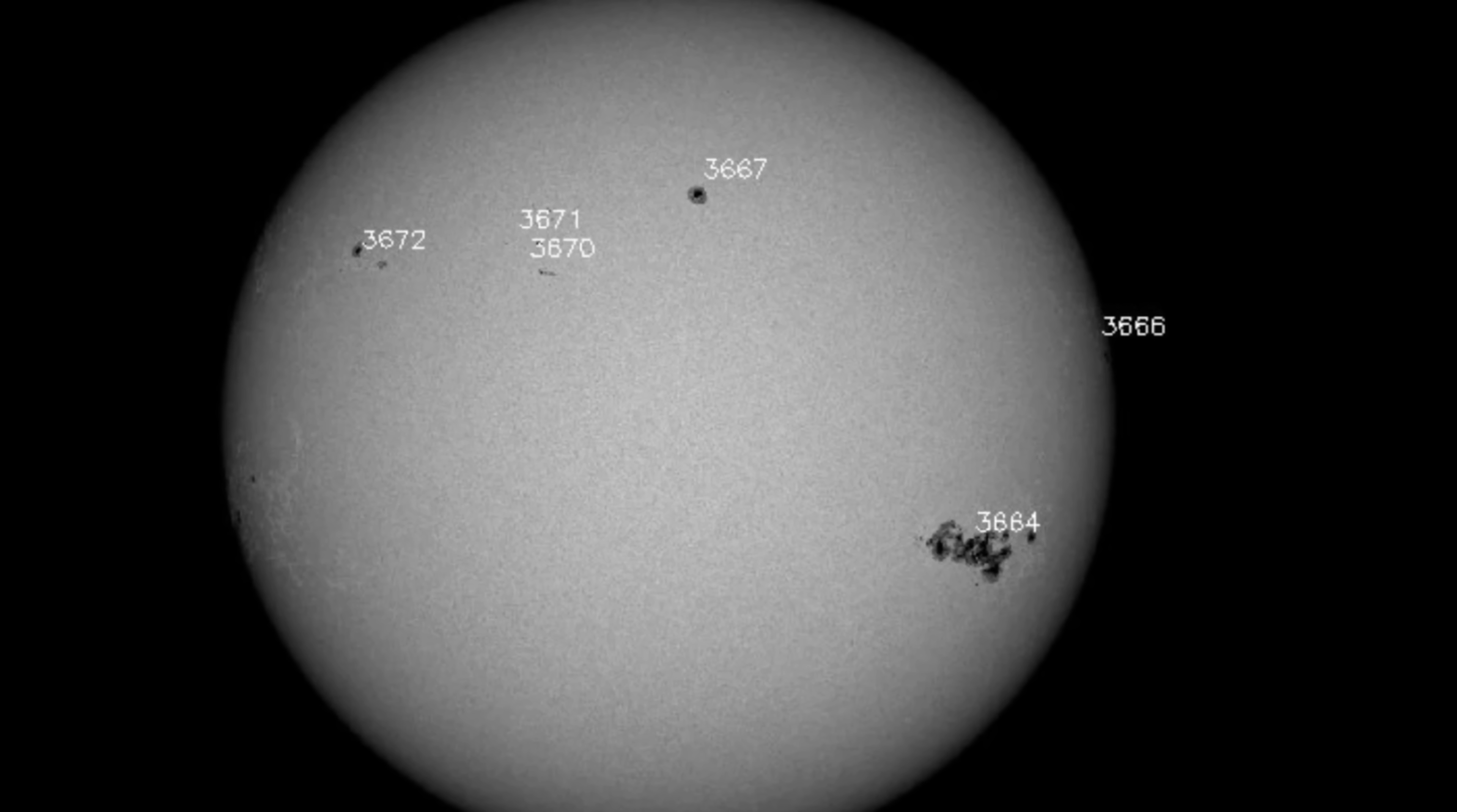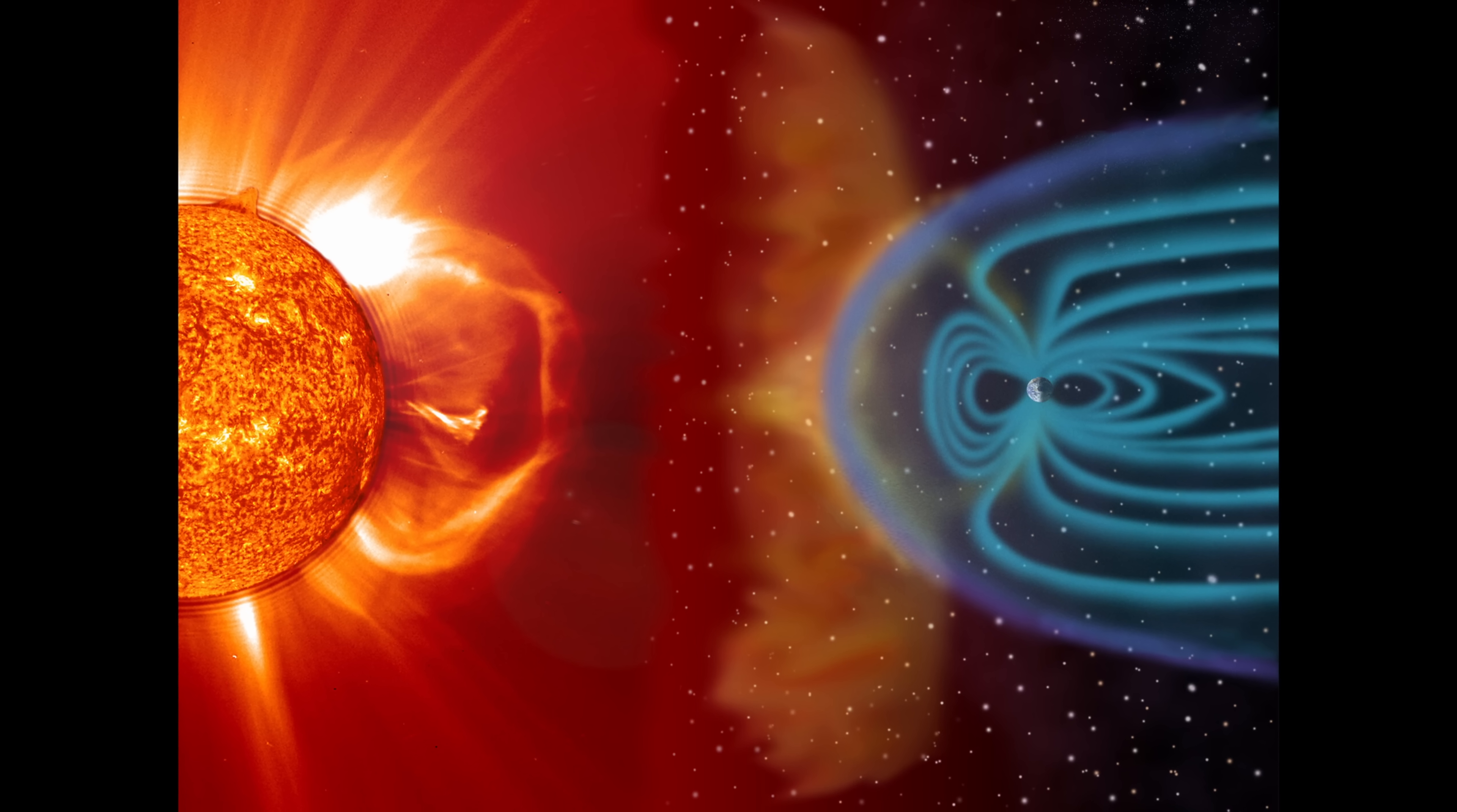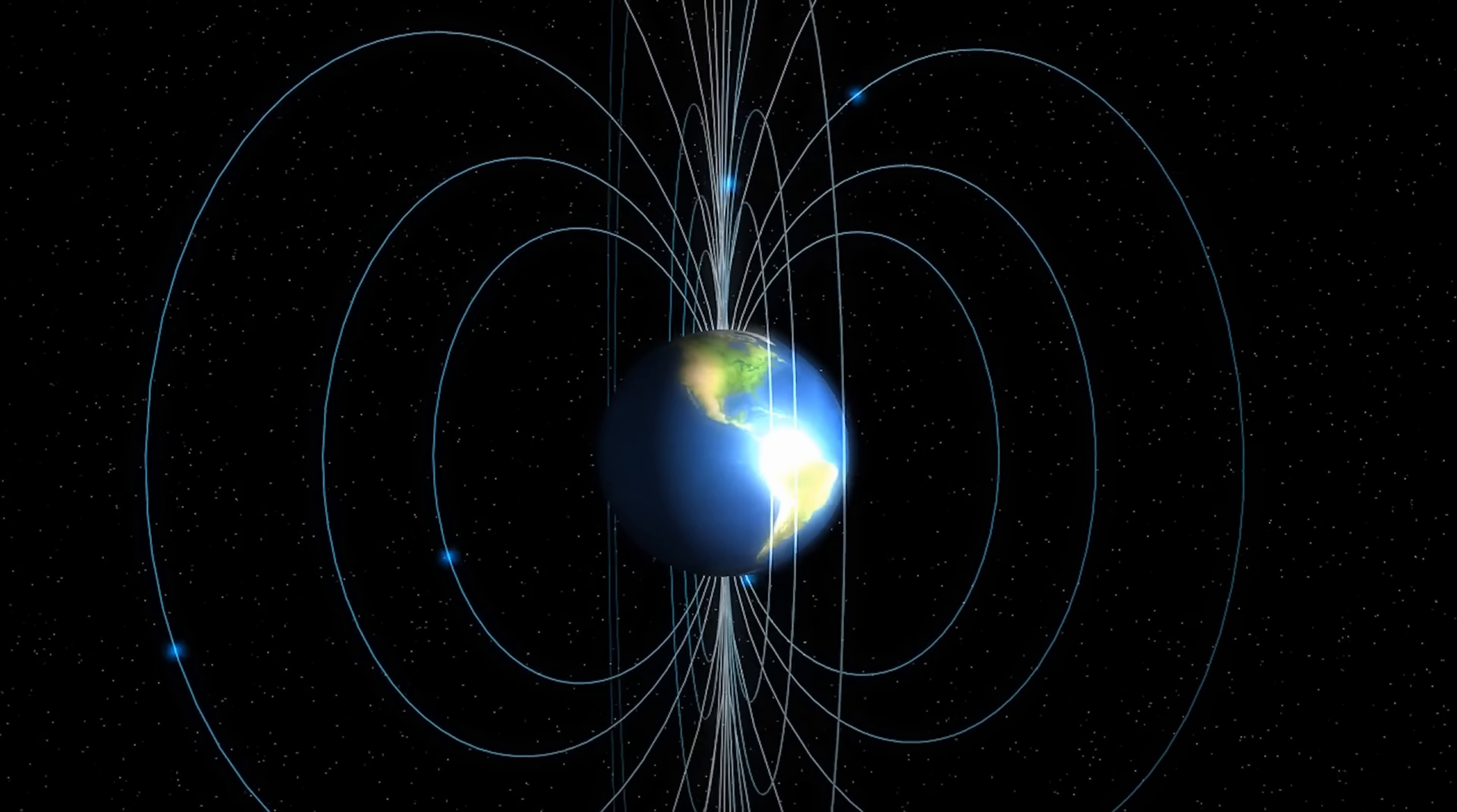The sunspot you see right here, referred to as AR-3664, a region that was about 17 times larger than planet Earth. Between May 8th and May 11th, it launched at least 8 different CMEs toward the planet and also produced one of the largest flares during this time, which caused radio blackout as well. Unlike the flare, CMEs took a few days to reach us. By May 10th and May 11th, it essentially resulted in a G5 class geomagnetic storm on the surface of the planet. This was the first G5 alert issued in the last 20 years.